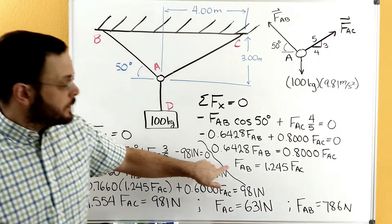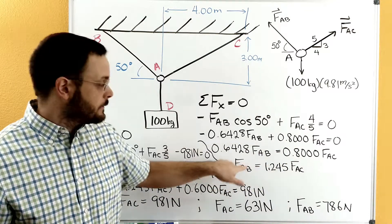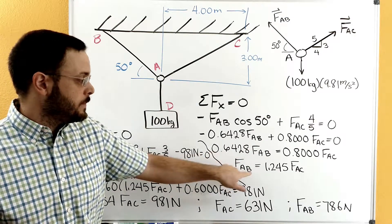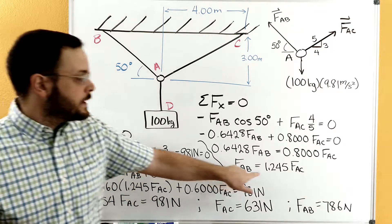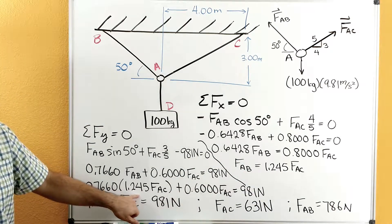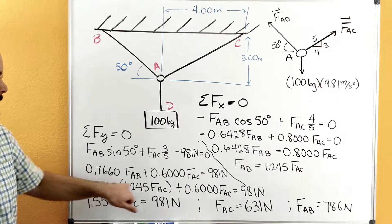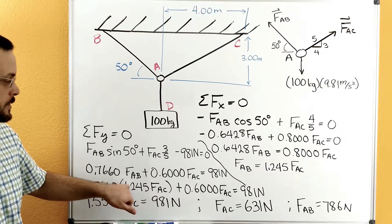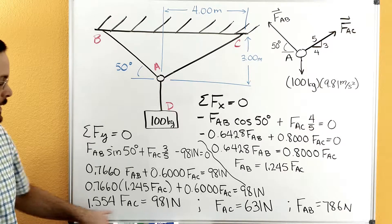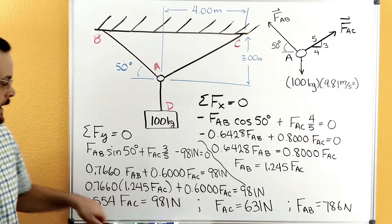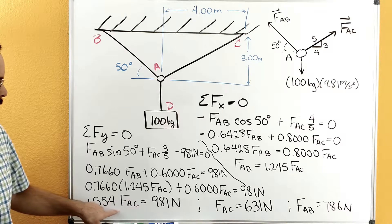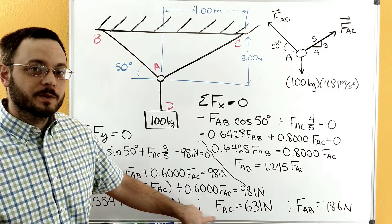And then we have this expression, this equation that we already developed from sum of forces in x. We'll go ahead and plug that in. So where we have FAB over here, we're instead going to plug in 1.245 FAC. And so you can see that being plugged in there. And then we'll go ahead and make the multiplication with the coefficients. And then add that coefficient to it. That'll give us 1.554 FAC is equal to 981 Newtons. And then divide through both sides here by the 1.554. And we get FAC is equal to 631.